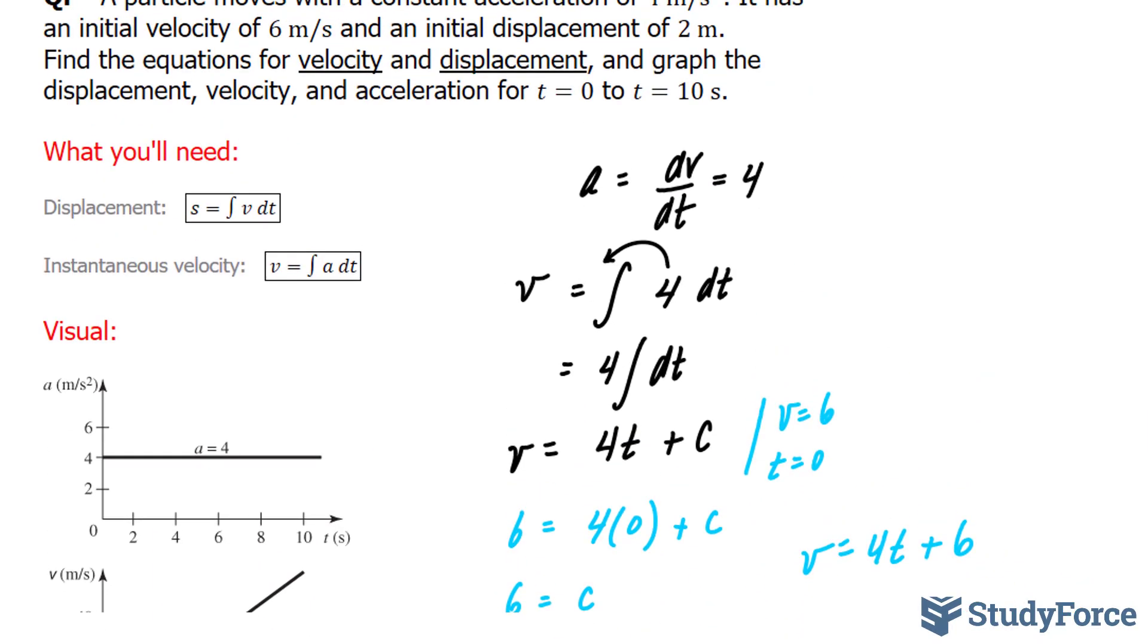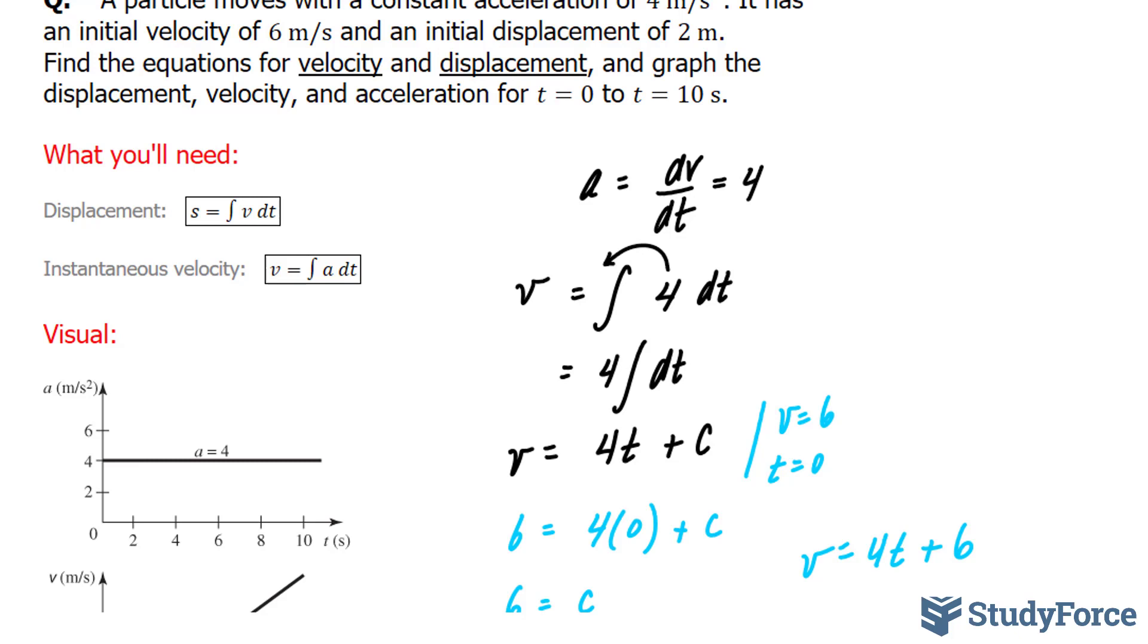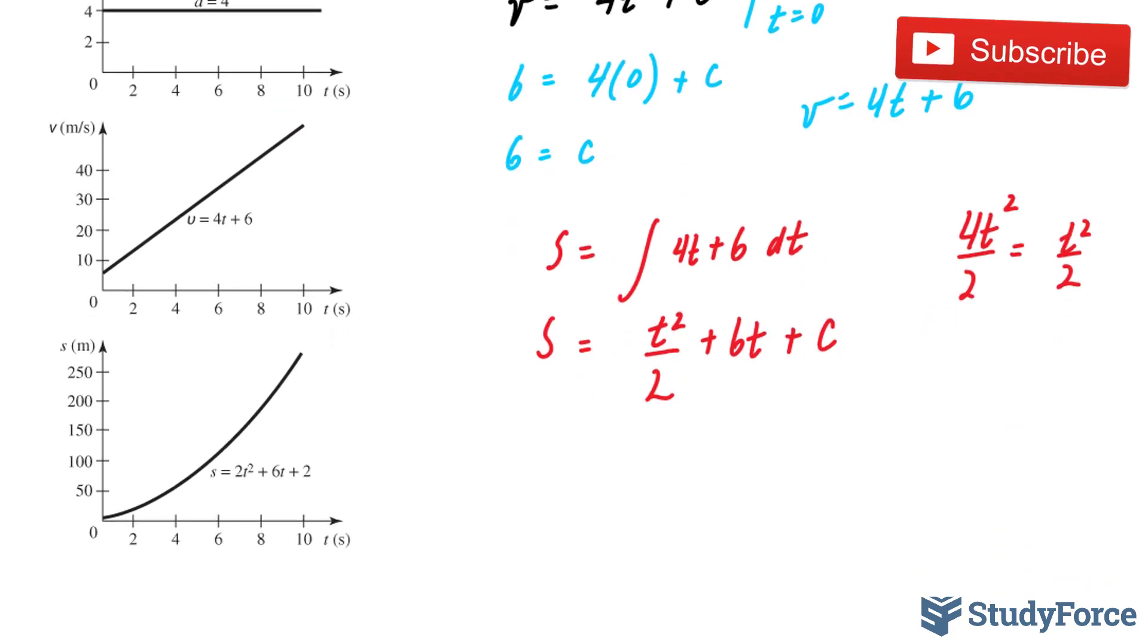Once again, according to the question, we are told that the initial displacement is 2 meters. So I can solve for c when t is equal to 0. s is equal to 2, our initial displacement, and t is equal to 0.